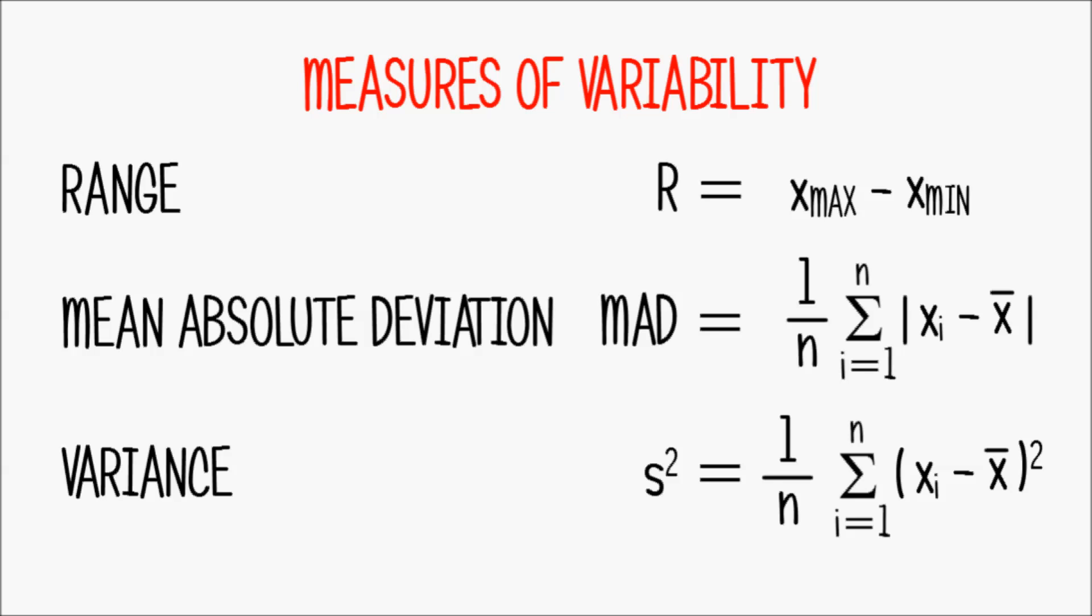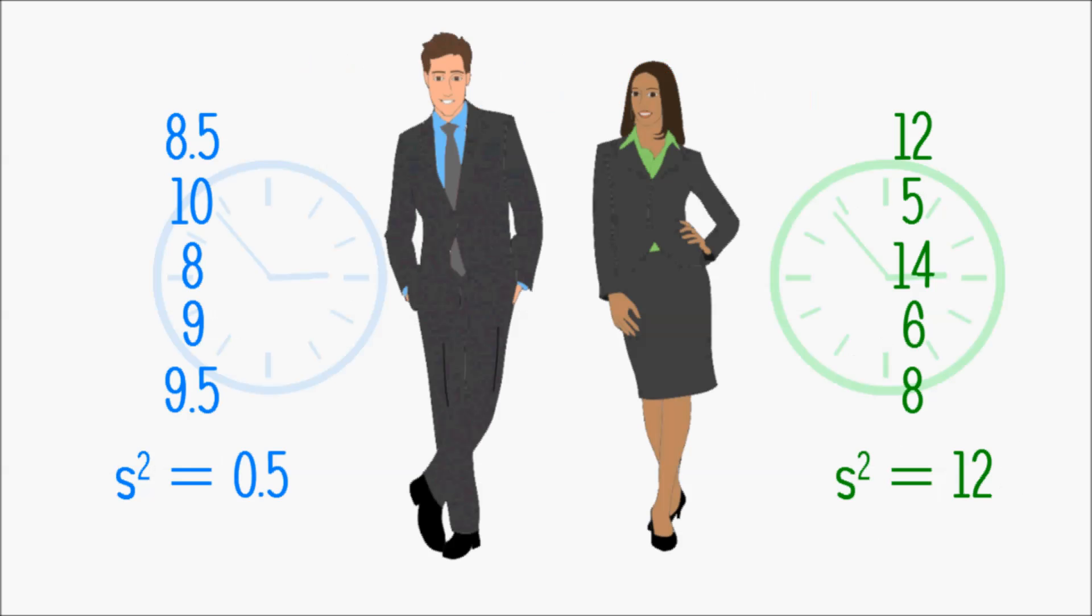And we can actually see that problem a little when we look at Anna's data values. Even the difference between the largest and the smallest value, i.e. the range, is not more than 9. If that is the case, how is it justifiable to say that the average difference is 12?